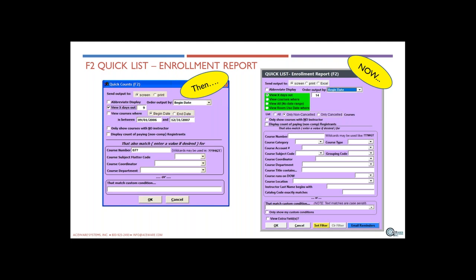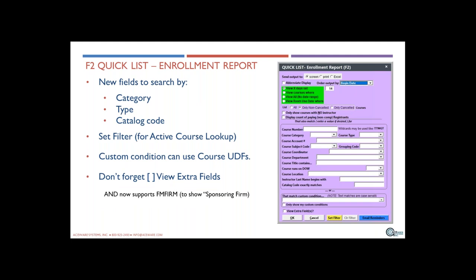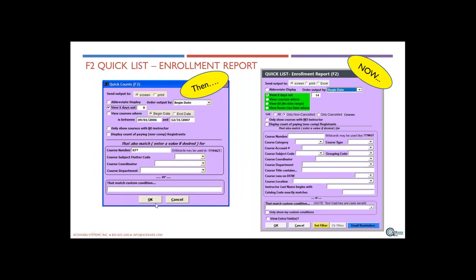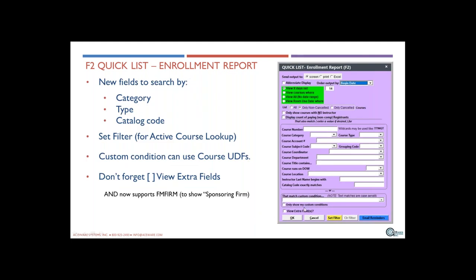This is then and that is now — when the F2 report was built initially it only had a few pieces, but now there are lots of options. Some of the new fields that F2 provides include the ability to search by category, by course type, by grouping code, by subject code, and by catalog code.